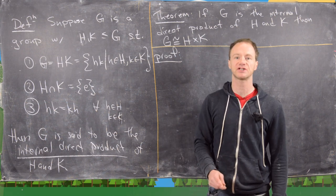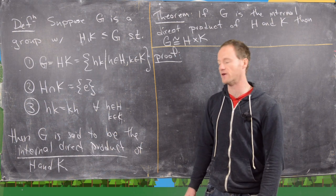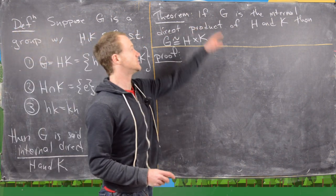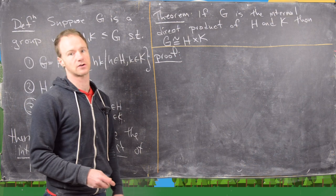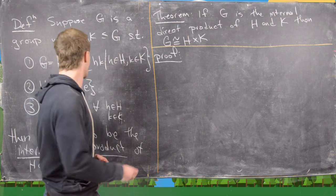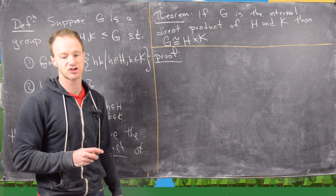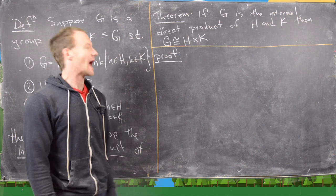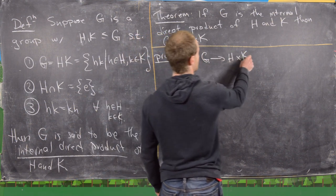If these three conditions are satisfied, we say that G is the internal direct product of H and K. We use the word direct product here because if G is the internal direct product of H and K, then G is isomorphic to the external direct product H cross K. Over here we have G equals HK; over here we have G isomorphic to H cross K. For this proof we're going to construct an explicit isomorphism: we define phi going from G to H cross K.